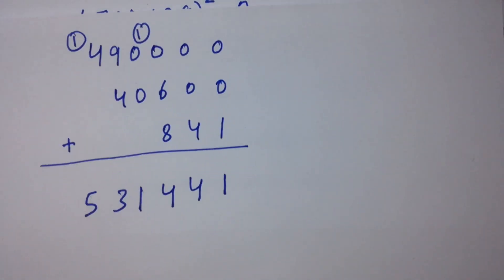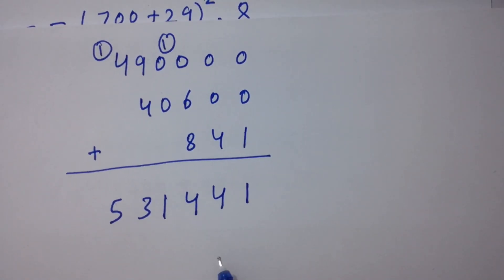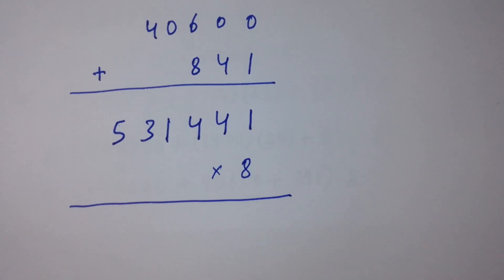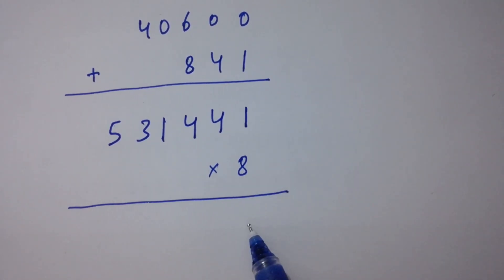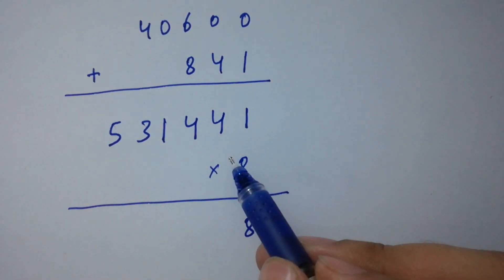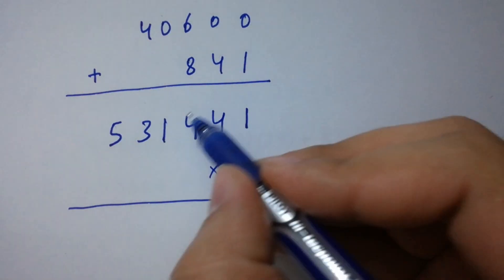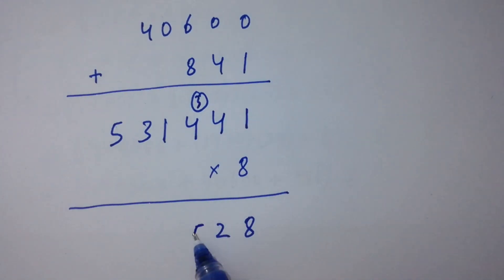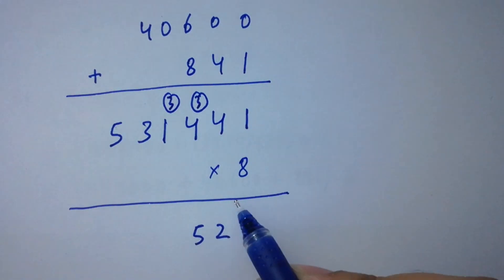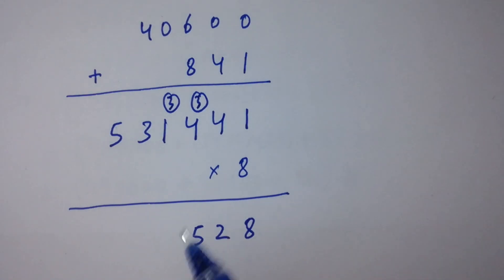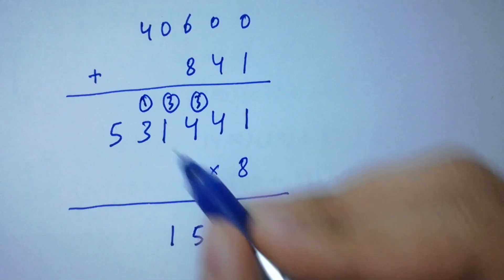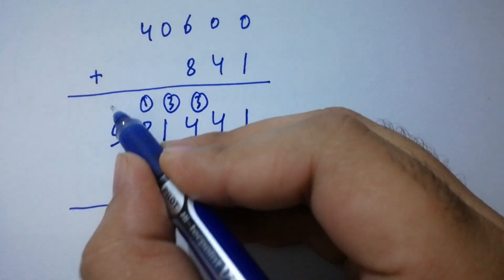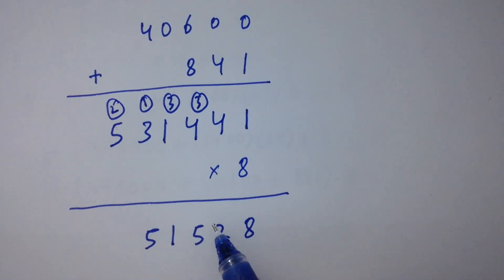Now I am going to multiply 531441 by 8. 8 times 1 is 8; 8 times 4 is 32, write 2 carry 3; 8 times 4 is 32 plus 3 gives 35, write 5 carry 3; 8 times 1 is 8 plus 3 gives 11, write 1 carry 1; 8 times 3 is 24 plus 1 gives 25, write 5 carry 2; 8 times 5 is 40 plus 2 gives 42. So we get 4251528.